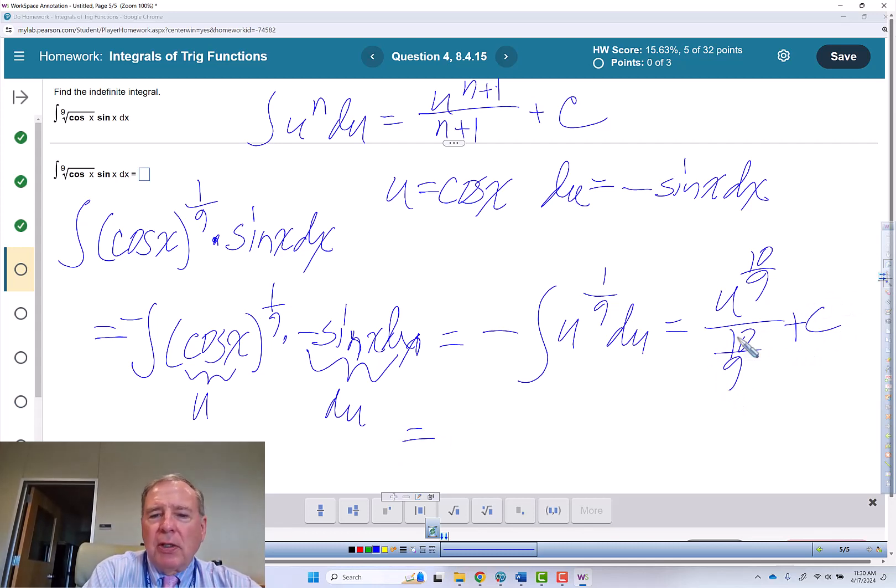Dividing with fractions is easy as pi. Flip the bottom and multiply. And then instead of saying u, I'm going to put in the thing that is u, which is cosine of x to the 10 ninths power plus c.